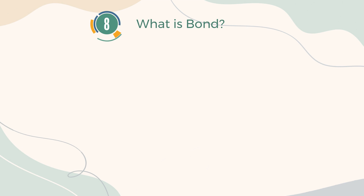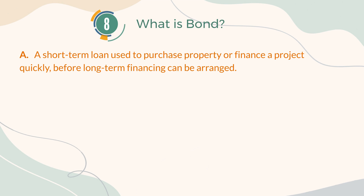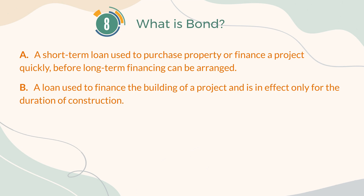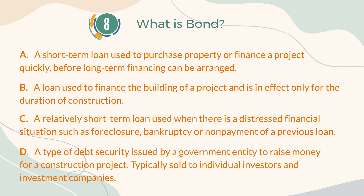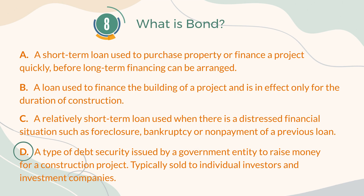Number 8. What is a bond? A. A short-term loan used to purchase property or finance a project quickly, before long-term financing can be arranged. B. A loan used to finance the building of a project, and is in effect only for the duration of construction. C. A relatively short-term loan used when there is a distressed financial situation such as foreclosure, bankruptcy, or non-payment of a previous loan. D. A type of debt security issued by a government entity to raise money for a construction project, typically sold to individual investors and investment companies. The correct answer is D.